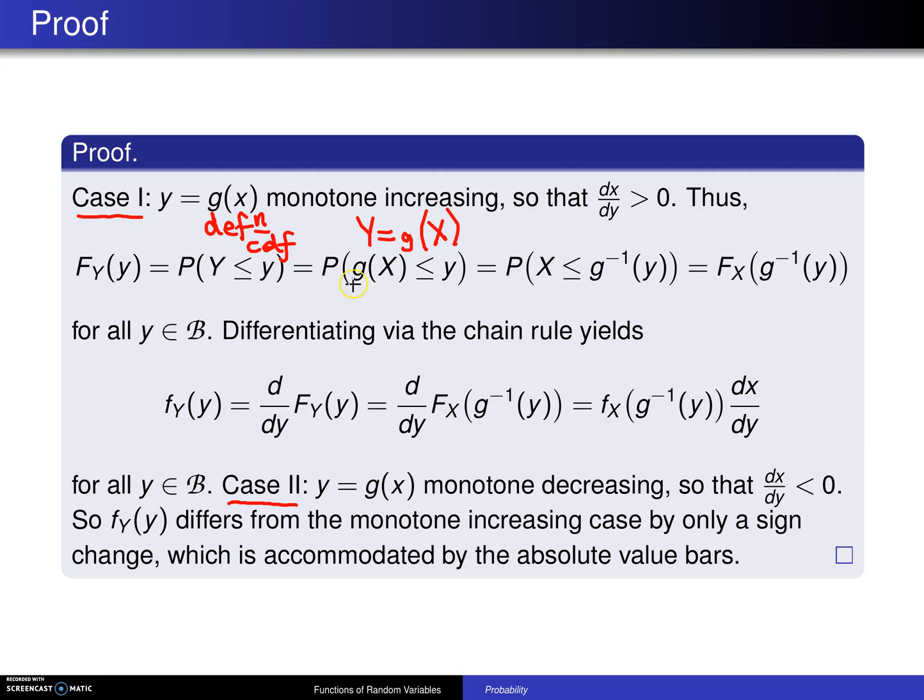You are allowed to go from here to here because you have a one-to-one function, so that is part of the reason you can do this. You can take g inverse of both sides of this inequality and you get this. Now the probability that X is less than or equal to this quantity is just the CDF evaluated at that quantity, and that is exactly the definition of the cumulative distribution function, this time going in the other direction.